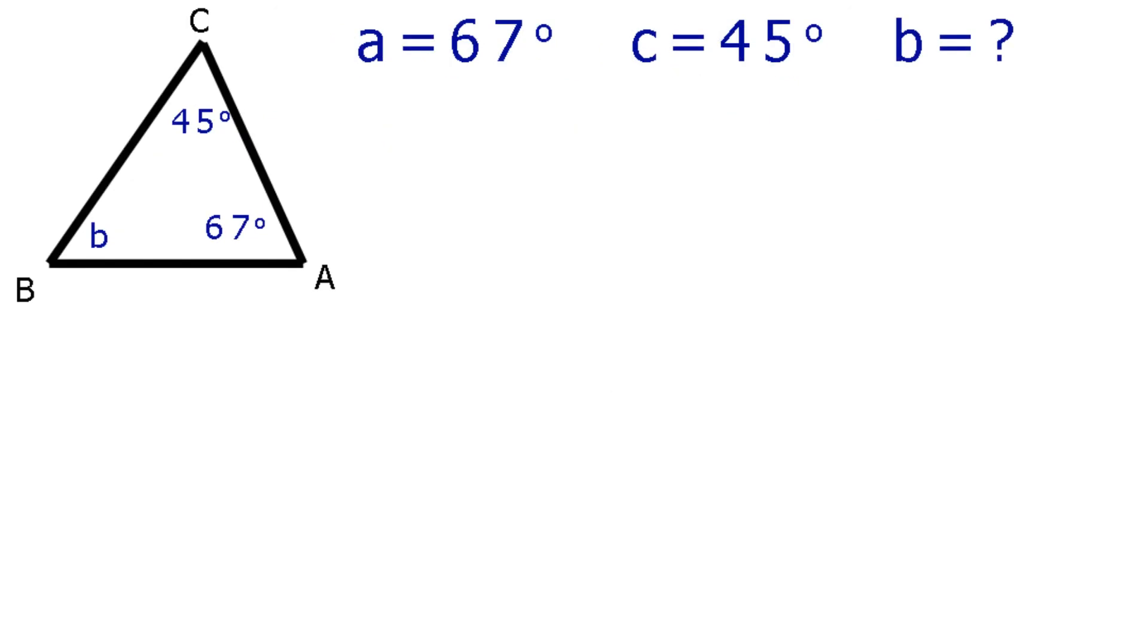Let's check this out with an example. Okay a was 67 degrees and c was 45 degrees. Find b. First we write down the angular relation for a triangle in terms of a, b and c. a plus b plus c is 180.